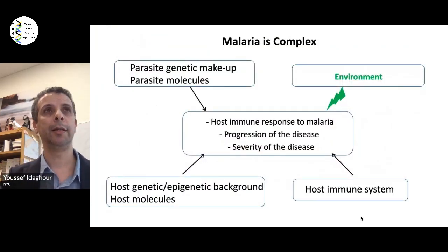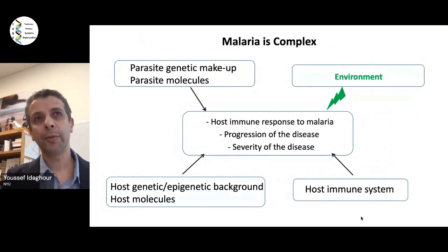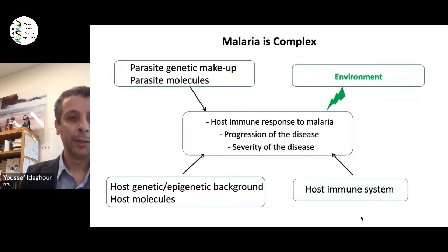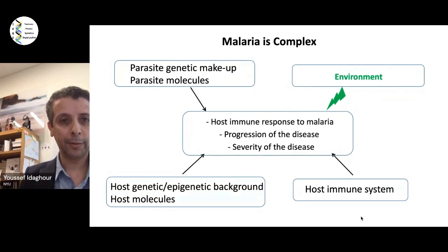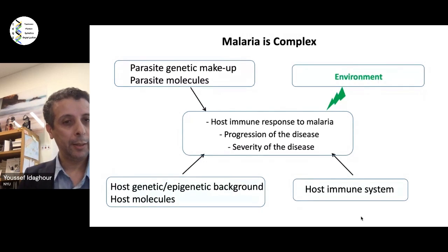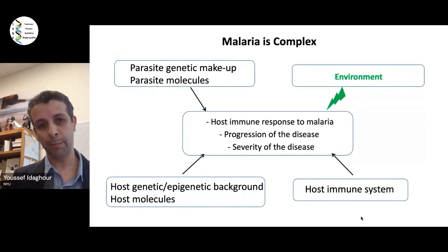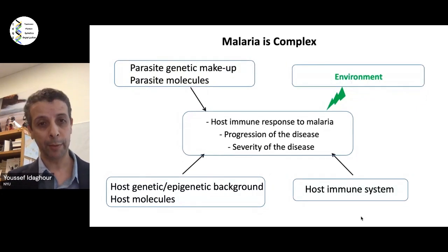The number of factors that can define the outcome of infection range from factors related to the parasite itself — its genetic makeup, its functional output, its RNA, proteins, and metabolites — as well as host genetic factors, ranging from genetic and epigenetic factors to host molecules. On top of this, you have processes related specifically to the immune system, and environmental factors can also affect these interactions.